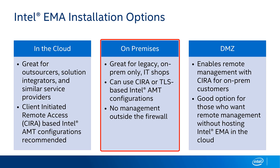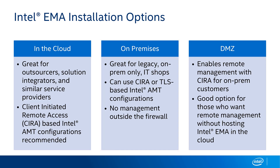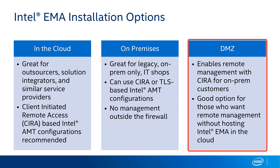With on-prem you get a little more flexibility on the AMT configuration models, but realize that features for managing devices outside of the firewall may not be available depending on your configuration. For those looking for the best of both worlds, there are various DMZ options — running your VMs for EMA on-premises and exposing them to the internet, or running them in the cloud and setting up a network layer VPN between your cloud provider and your IT network inside the firewall.